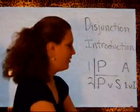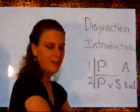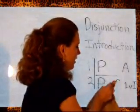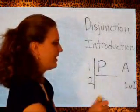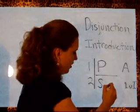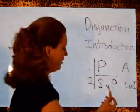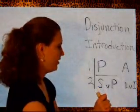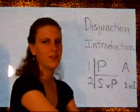Another thing to notice is that maybe you didn't want P or S — you wanted to say S or P. Well, that is just fine. It still holds true that if P by itself is true, then the statement S or P, that whole expression, is also true. So you can put the extra piece either in front or behind the original one, and then just cite the line where you got the original piece of information.